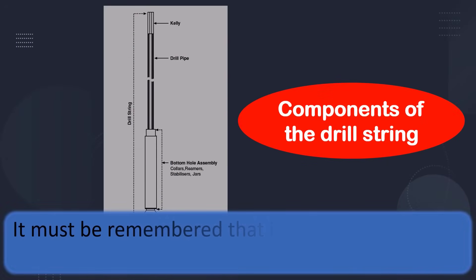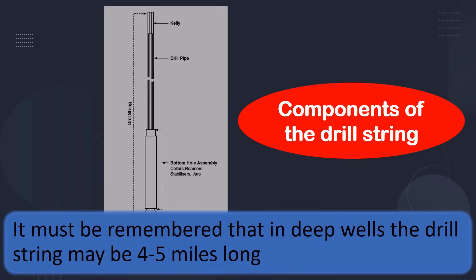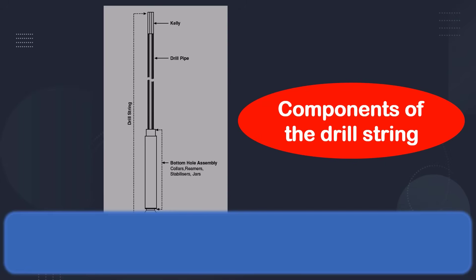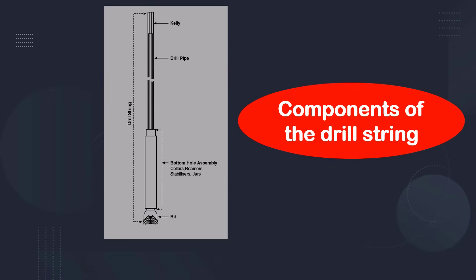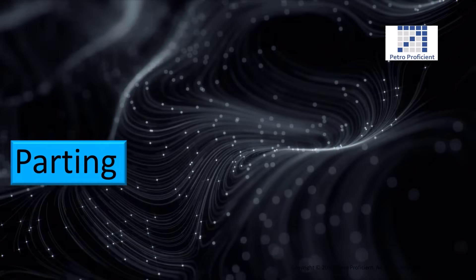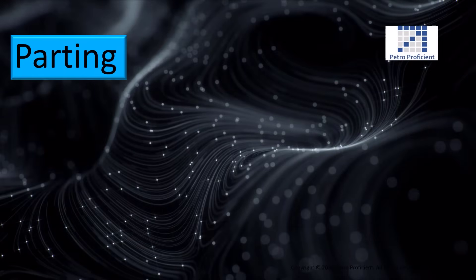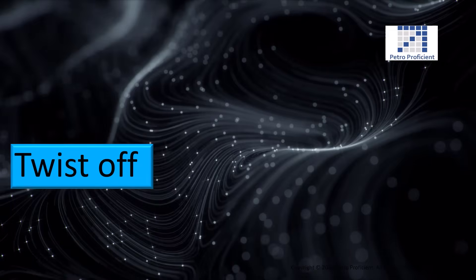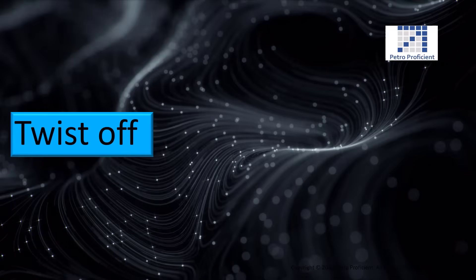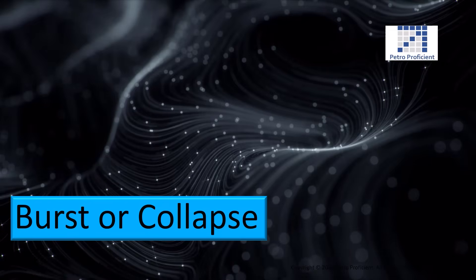It must be remembered that in deep wells, the drill string may be four to five miles long. Drill pipe failures can be categorized as follows: parting due to excessive tension, twist off due to excessive torque, and burst or collapse due to excessive internal or external pressure.